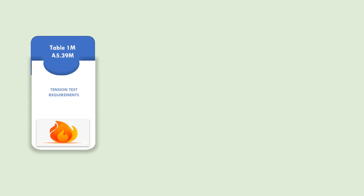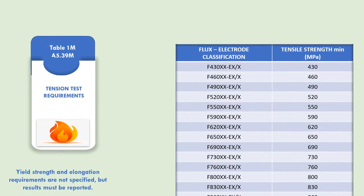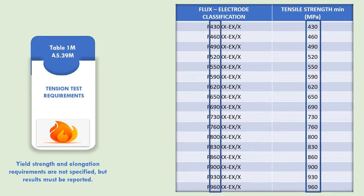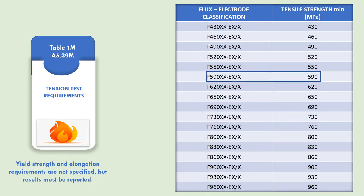Table 1 gives details about the tension test requirements. F is followed by a three-digit number, which indicates the tensile strength requirement. The number 430 indicates that it meets the tensile strength requirement of 430 MPa. Weld metal from a specific flux electrode combination that meets a higher tensile strength requirement also meets the requirements of all lower strength entries in the table. For example, weld metal meeting the F590 requirement also meets the requirement for designators with lower strength.